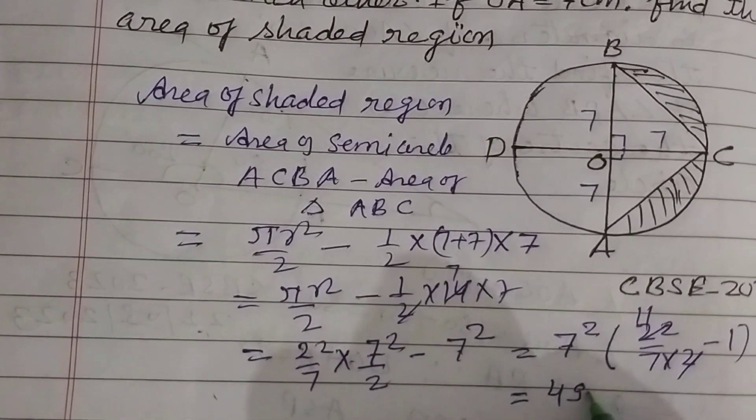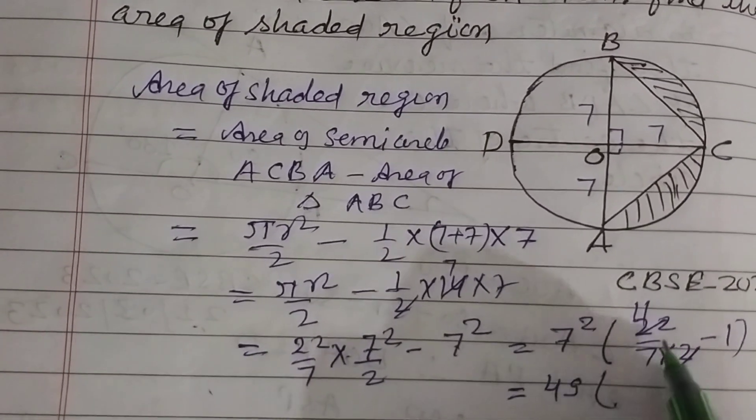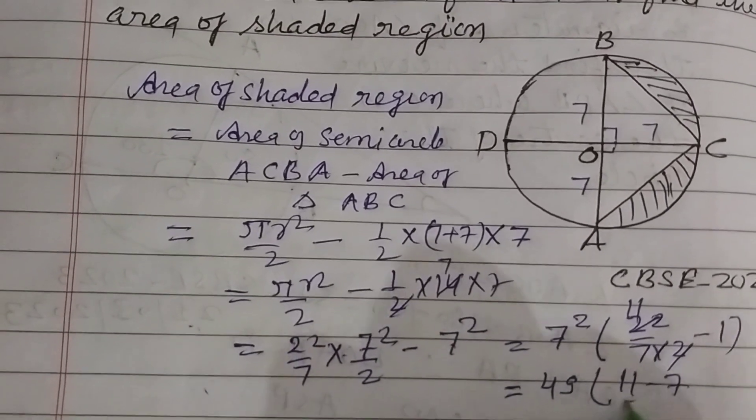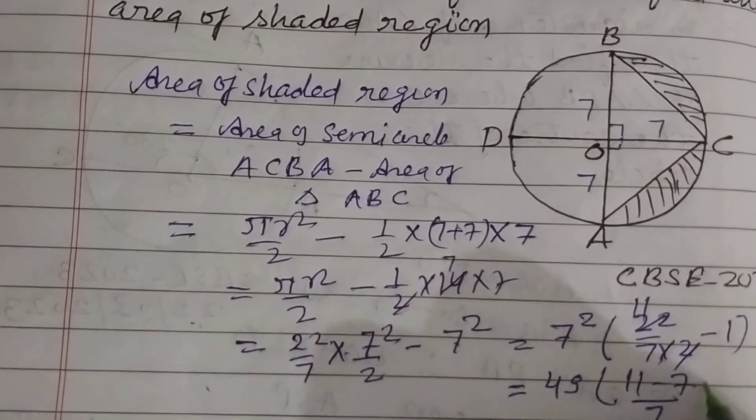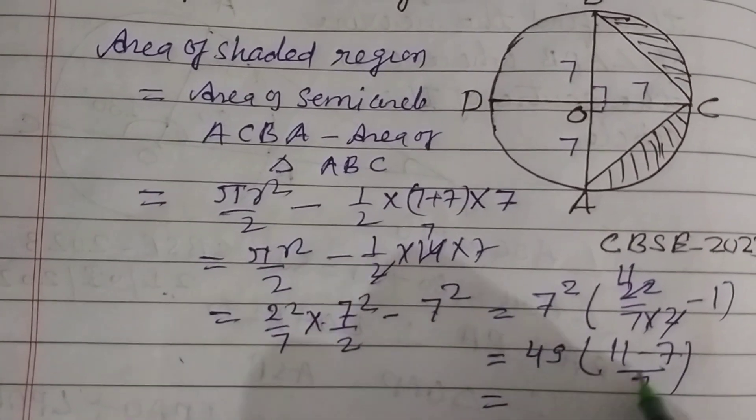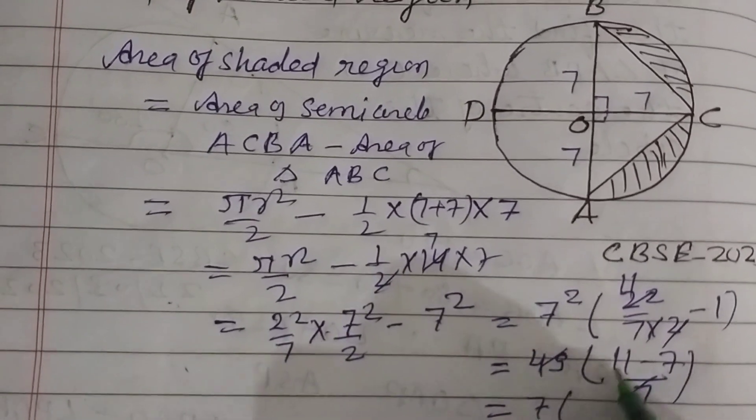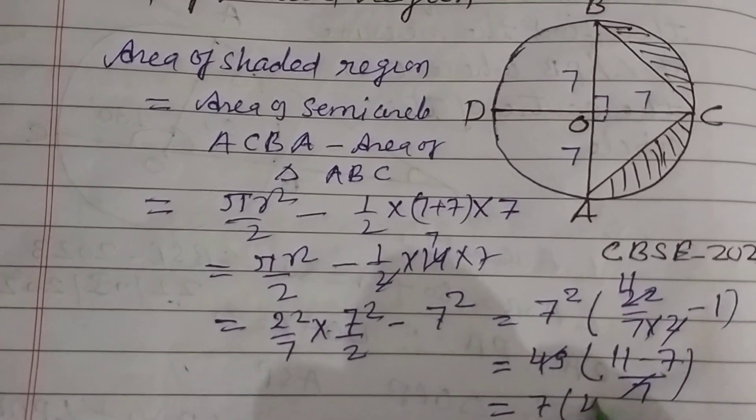So this is 49, and 11 minus 7 by 7. So 7 times 7 is 49, and this is 11 minus 7, which is 4.